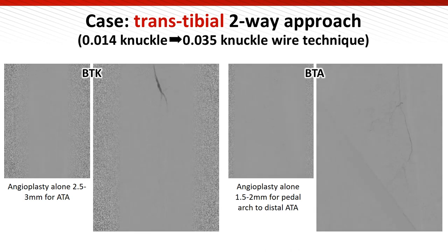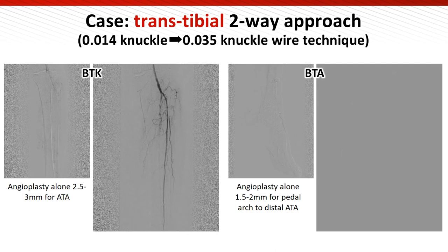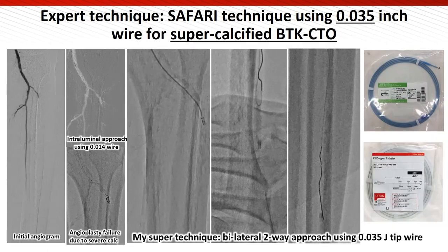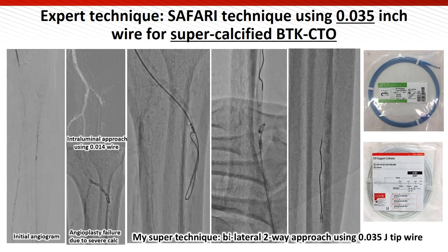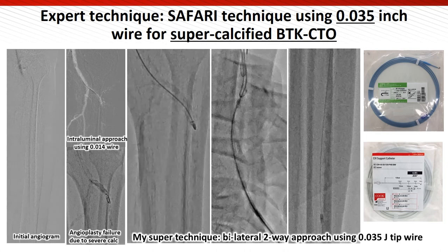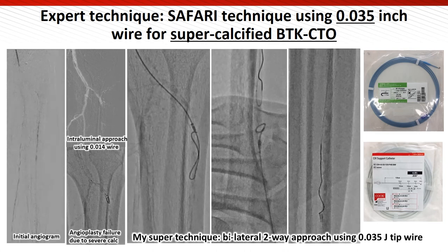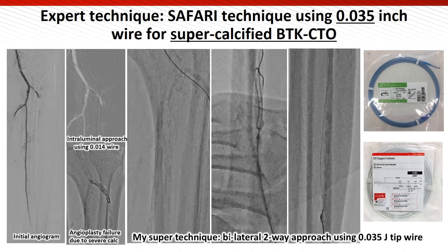After successful wire crossing, angioplasty with 1.5-2mm for BTA and BTA, and 2.5-3mm for BTK were done. The left ATA and dorsalis pedis artery were successfully restored. The ultimate technique for BTK CTO with severe calcification is the SAFARI technique using the 0.035-inch wire. In this case, a 4-French sheath was placed at the dorsalis pedis artery, and a bidirectional two-way approach using the 0.035 wire was conducted.